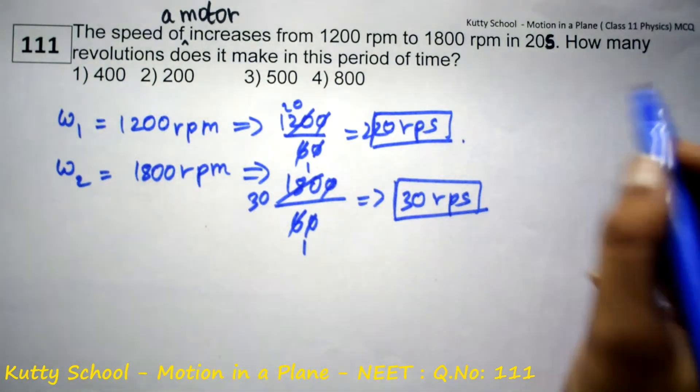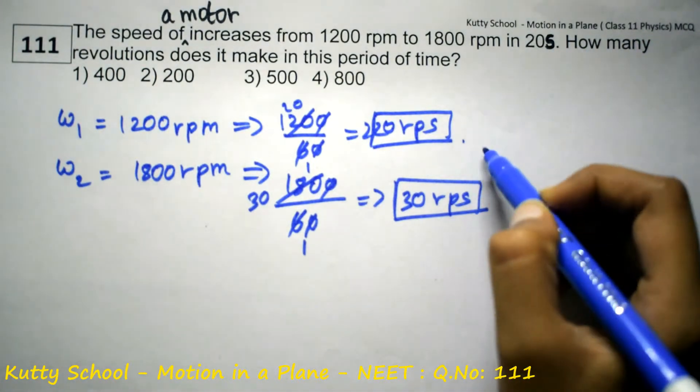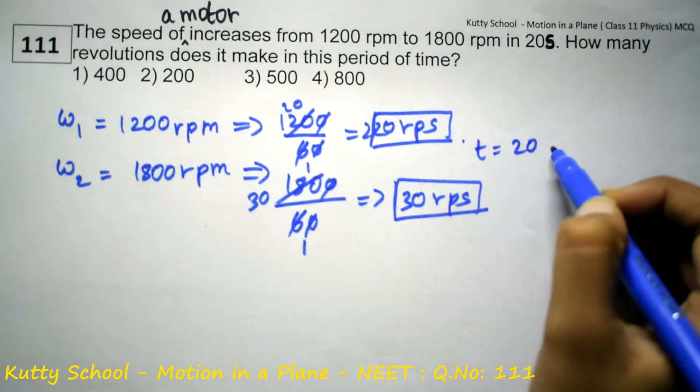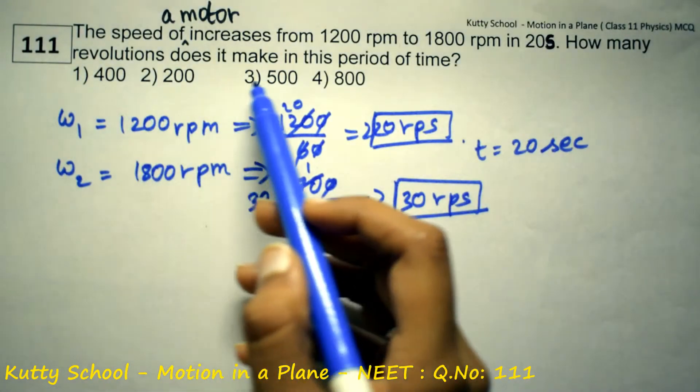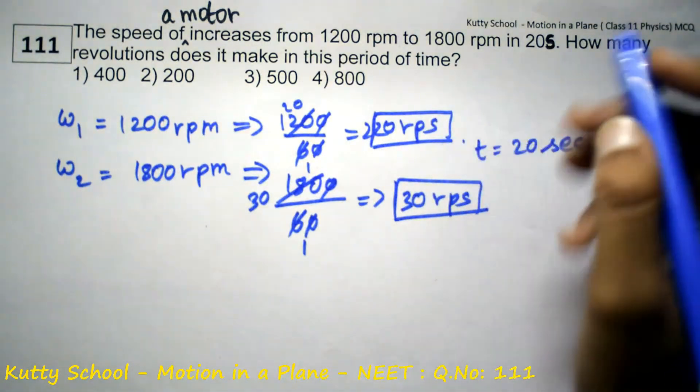20 seconds time is equal to 20 seconds. T is equal to 20 seconds. How many revolutions does it make in this period of time?